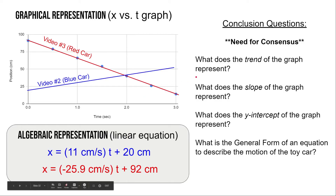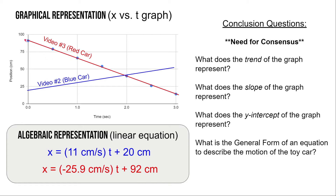The first question: what does the trend of the graph represent? We know it is linear, and we said before that when a graph is linear the position values are changing linearly with time. That means each and every second that goes by, the blue car is changing its position by the same amount. In the case of the red car, its position decreases by the same amount each and every second — with a linear relationship it's changing that position by the same amount each second.